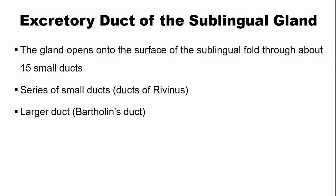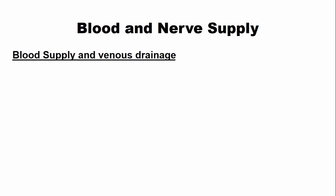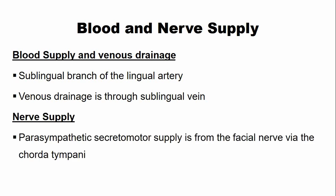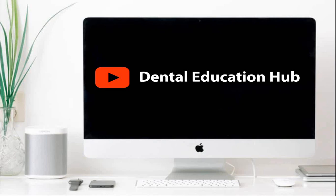Sometimes a single large duct is present in the sublingual gland, which is called the Bartholin duct. Regarding blood and nerve supply: the blood supply is through the sublingual branch of the lingual artery, while venous drainage is through the sublingual vein. The parasympathetic supply is through the chorda tympani nerve.